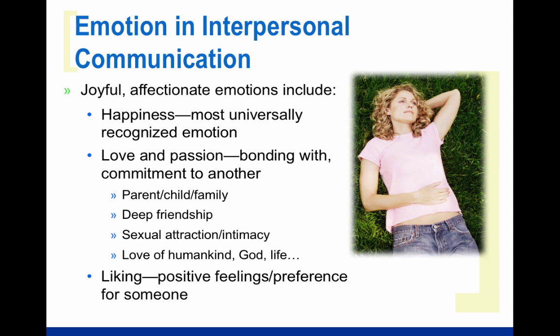Then we have love and passion. Love and passion is sometimes easier to recognize than to define, and one reason for that is we experience a lot of different forms of love. There is that bonding and commitment to the people in our family — parents, children, relatives. We also can love our friends, people who we have a deep abiding friendship with. And then, when we think of love — particularly passion — we think of sexual attraction and intimacy and that bonding to another person and the desire to commit to them.